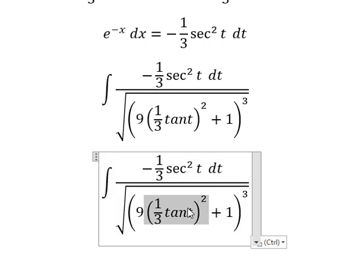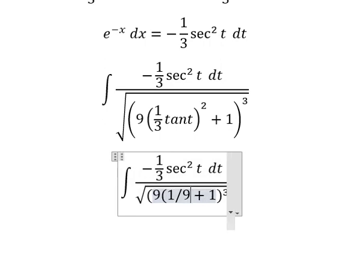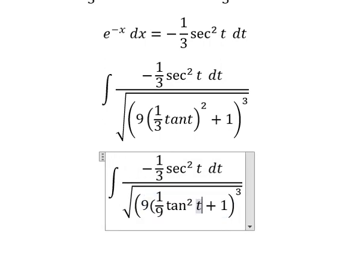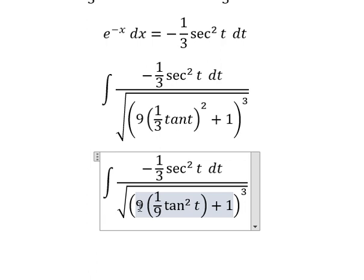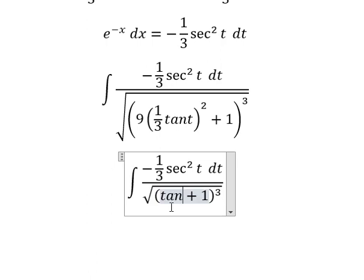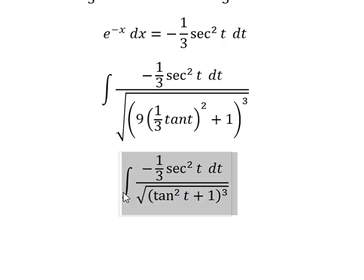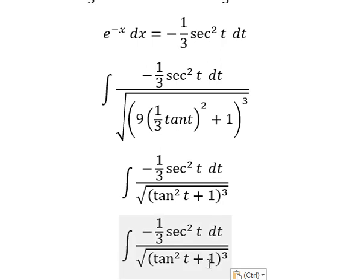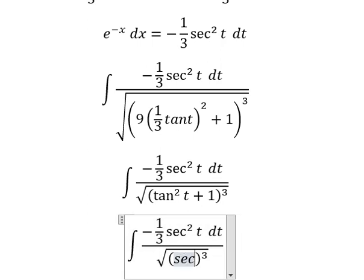This gives us 1 over 9 times t squared. The 9 and 9 cancel. We change this to sec squared of t.